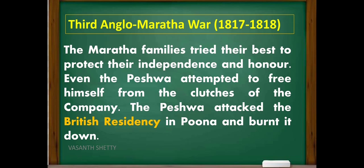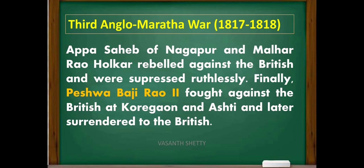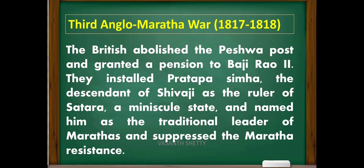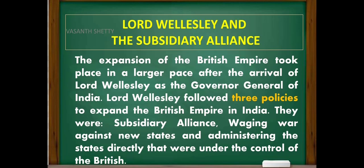The Third Anglo-Maratha War was fought between 1817 to 1818. The Maratha families tried their best to protect their independence and honor. Even the Peshwa attempted to free himself from the clutches of the company. The Peshwa attacked the British residency in Poona and burnt it down. Appa Sahib of Nagpur and Malhar Rao Holkar rebelled against the British and were suppressed ruthlessly. Finally, Peshwa Baji Rao II fought against the British at Koregaon and Ashti and later surrendered. The British abolished the Peshwa post, granted a pension to Baji Rao II, and installed Pratapsinh — a descendant of Shivaji — as the ruler of Satara.